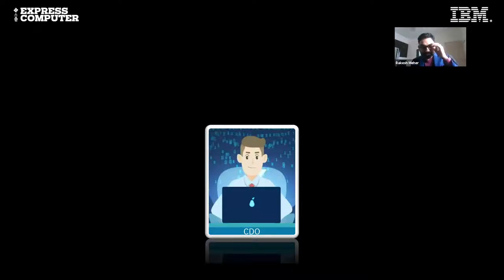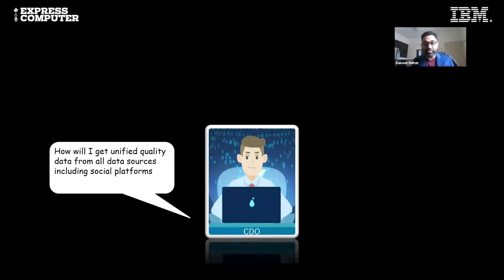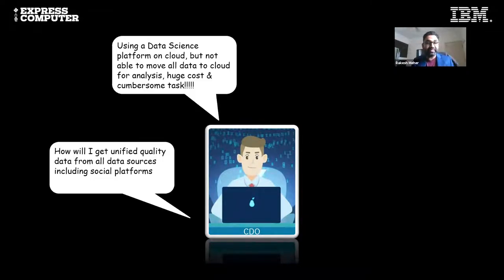Let me share a few concerns of a Chief Data Officer. The first is: how do I get unified data quality across the enterprise from all data sources including social platforms? I remember a discussion with the CIO of a bank who asked how she could get all the data into one landing zone — but not a data swamp; it needed to be a governed data lake. Many such projects are actually data swamps rather than governed data lakes.